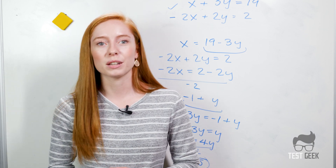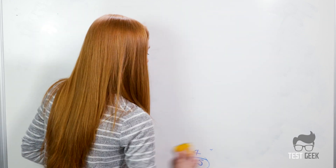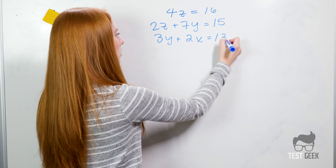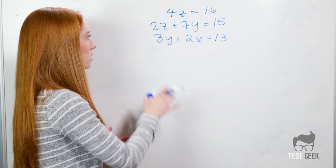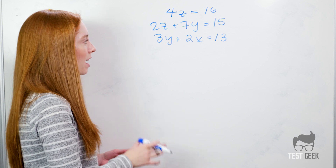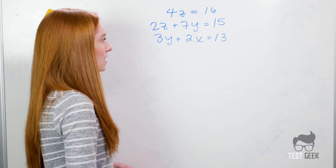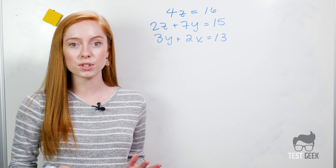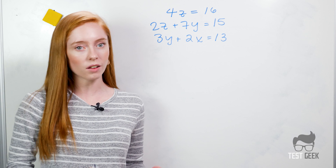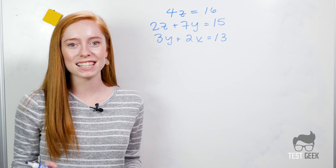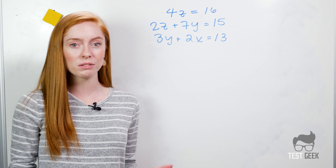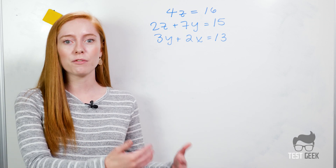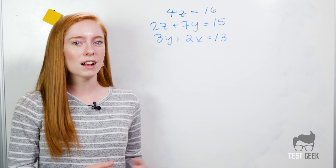Let's look at one more example for linear equations. We have 4z equals 16, 2z plus 7y equals 15, and 3y plus 2x equals 13. We actually have three variables, so we need three equations in order to solve — and we do. Always start with your easiest equation and try to solve for one variable. If you're not sure where to start, just do the easiest step first — that will usually get you going in the right direction.